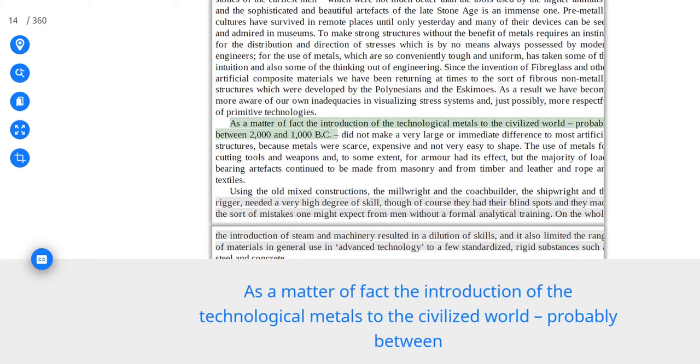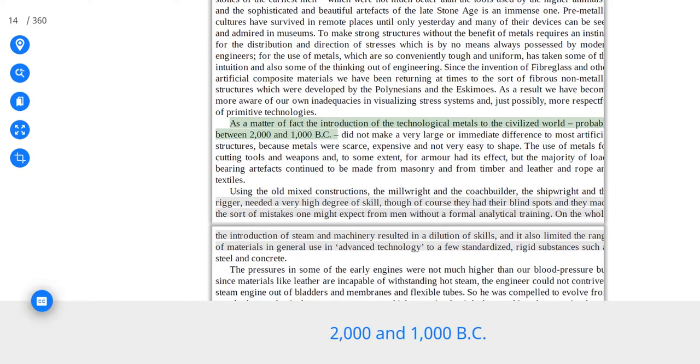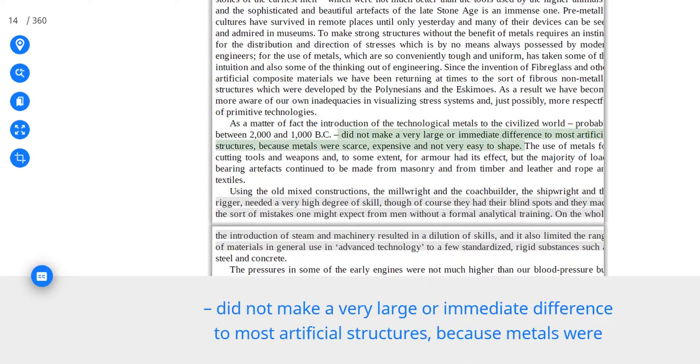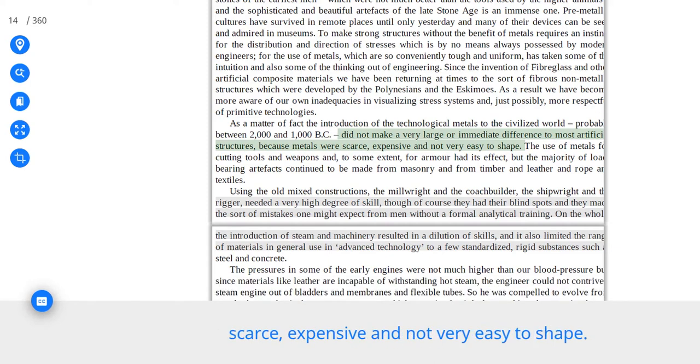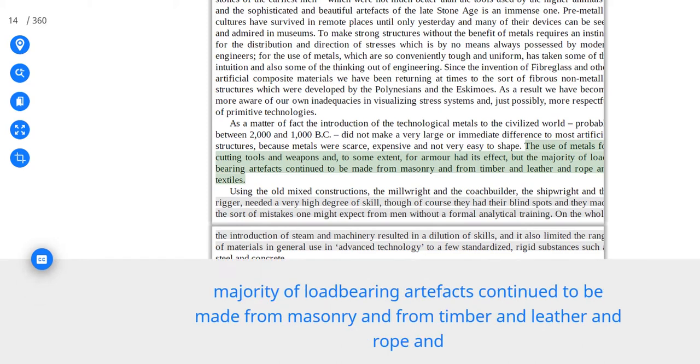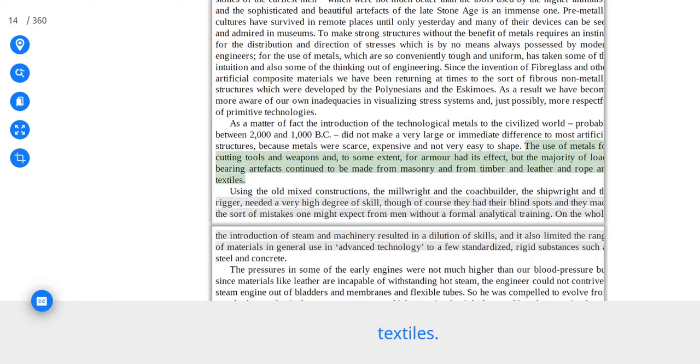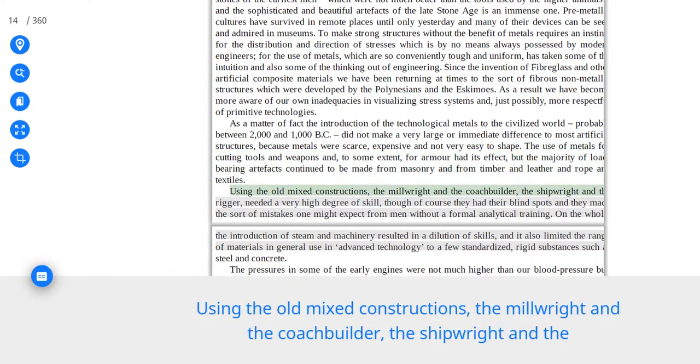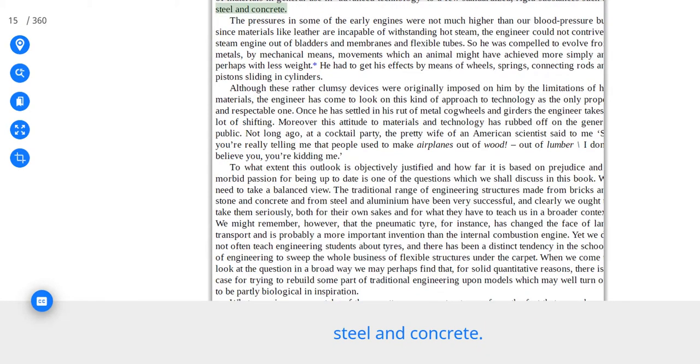Since the invention of fiberglass and other artificial composite materials we have been returning at times to the sort of fibrous non-metallic structures which were developed by the Polynesians and the Eskimos. As a result we have become more aware of our own inadequacies in visualizing stress systems and, just possibly, more respectful of primitive technologies. As a matter of fact the introduction of the technological metals to the civilized world, probably between 2000 and 1000 BC, did not make a very large or immediate difference to most artificial structures, because metals were scarce, expensive and not very easy to shape. The use of metals for cutting tools and weapons and, to some extent, for armor had its effect, but the majority of load-bearing artifacts continued to be made from masonry and from timber and leather and rope and textiles.